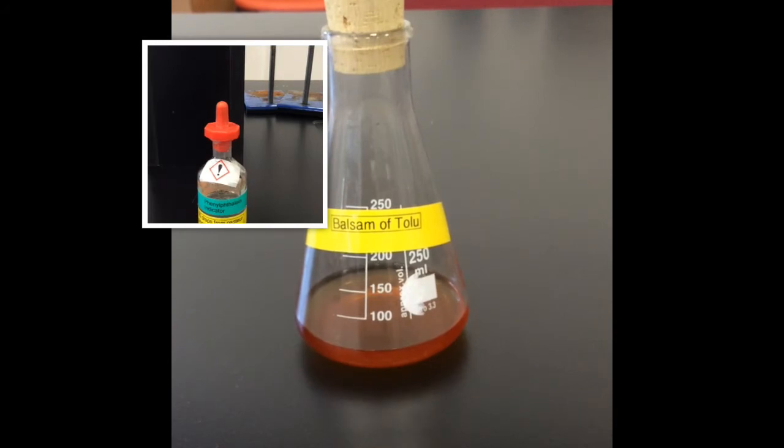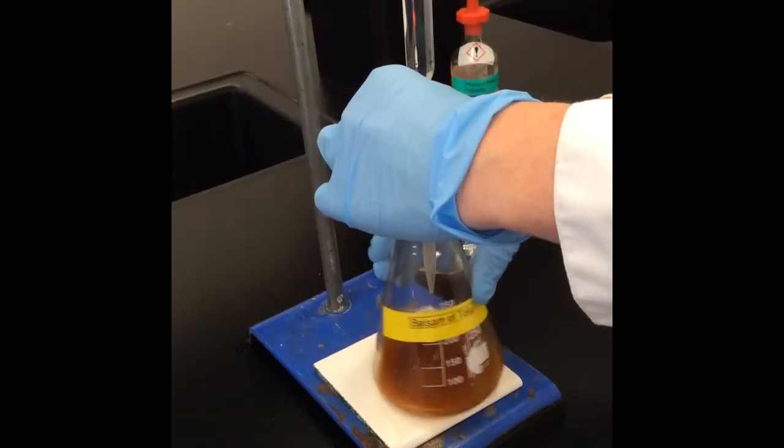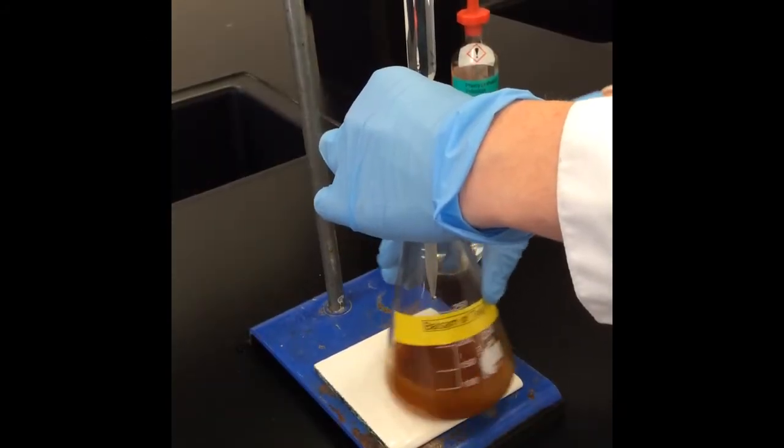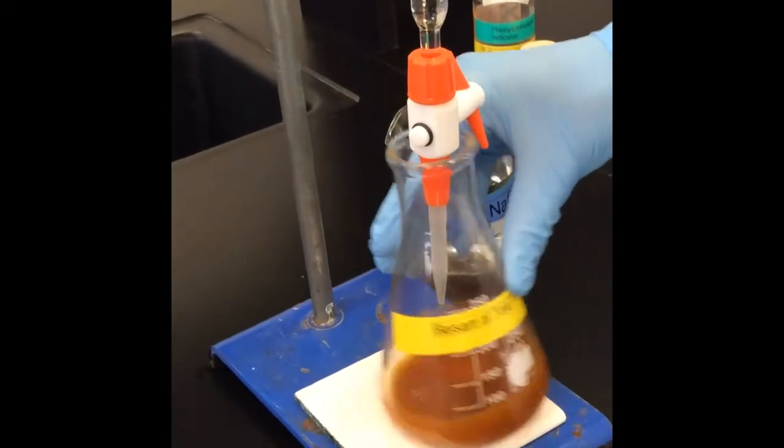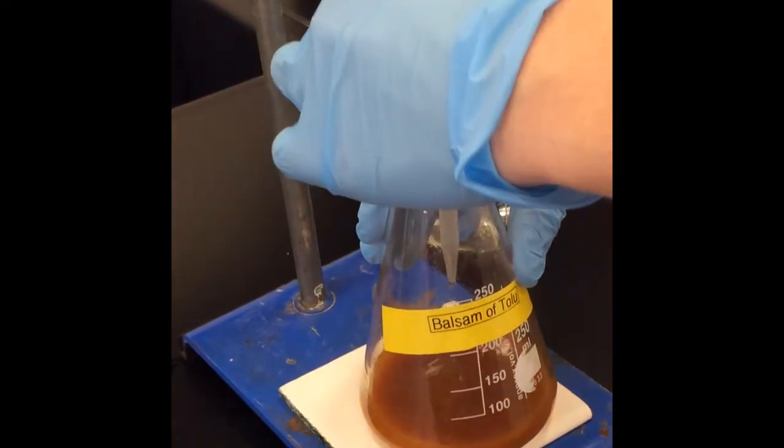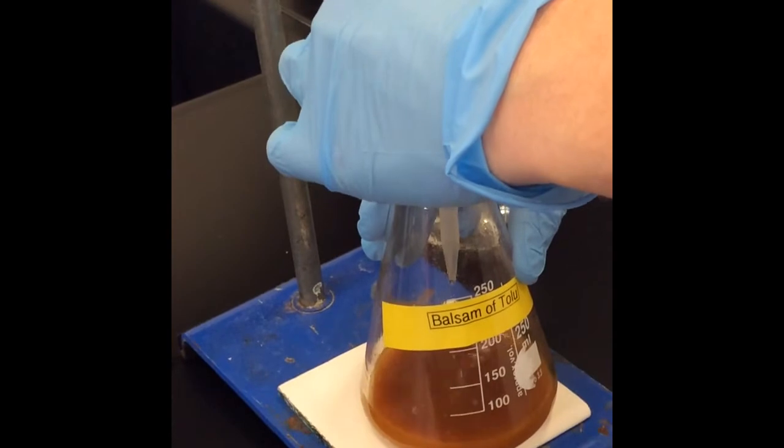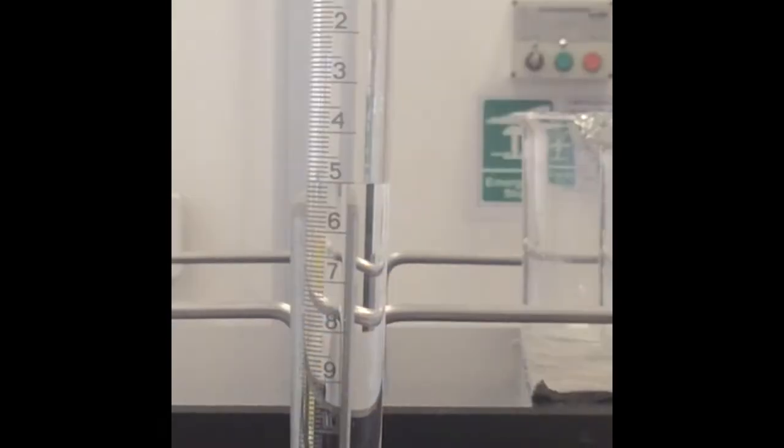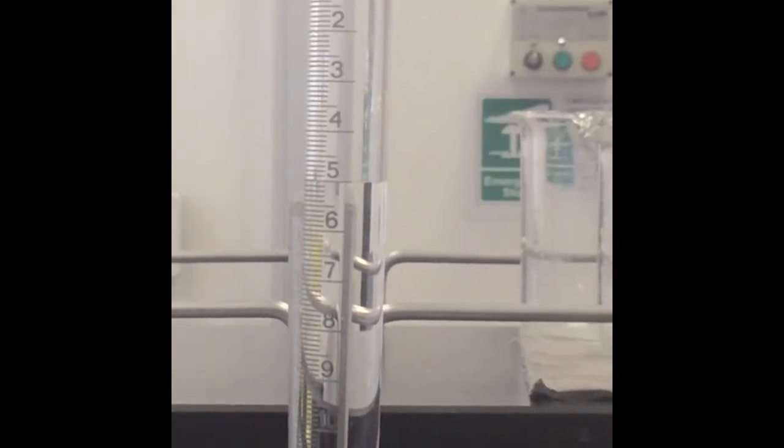Next, the balsam of Peru with the phenolphthalein indicator was titrated against the NaOH. You can see the change in color from the dark brown to the lighter red color. Again, this was done three times and the mean was recorded.